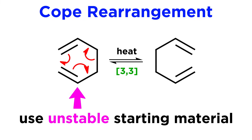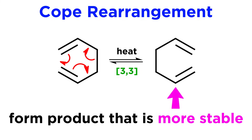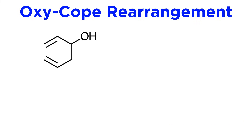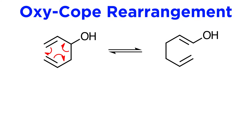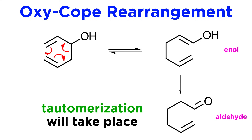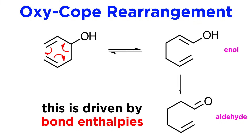Similarly, instead of destabilizing the reactant, we can also stabilize the product. Take this substrate for example, with a hydroxyl in this position. If the shift is carried out, an enol will result, which as we know will rapidly tautomerize to give the carbonyl — in this case an aldehyde. Here, bond enthalpies are responsible for the stability of the product, with the carbon-oxygen double bond being especially strong.